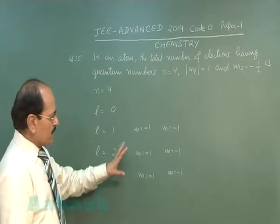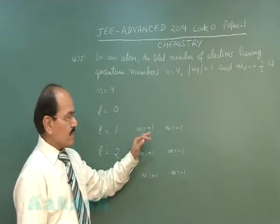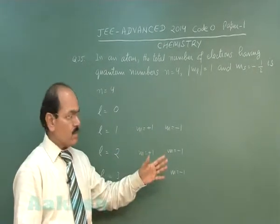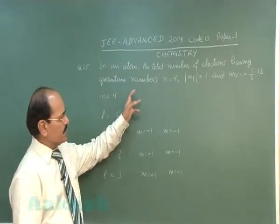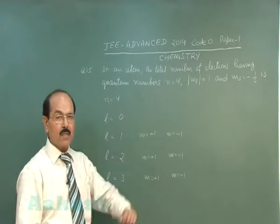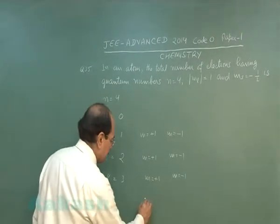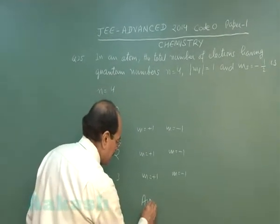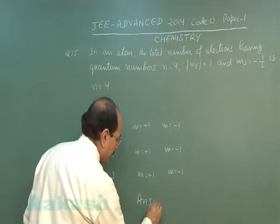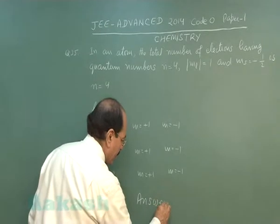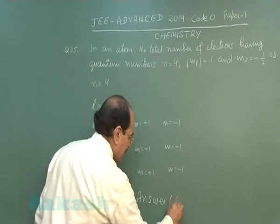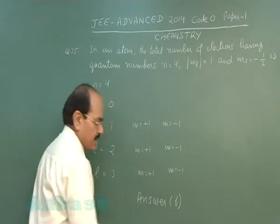So, it means there will be 6 electrons satisfying the given conditions. The correct answer is 6.